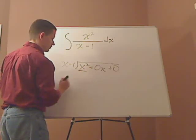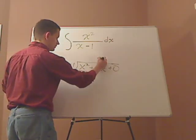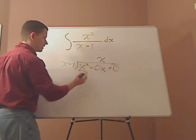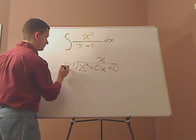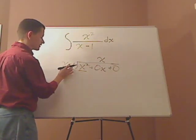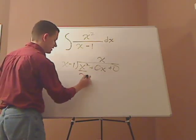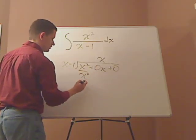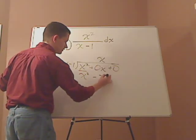Okay, that's x. Now I do x times this. What's x times x minus 1? It's going to be x squared minus x.